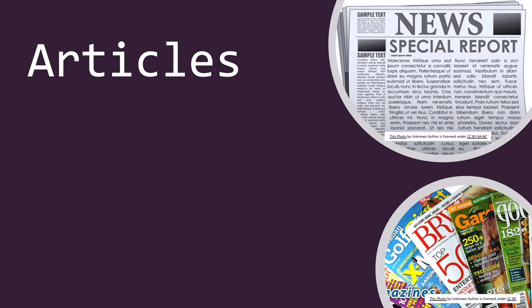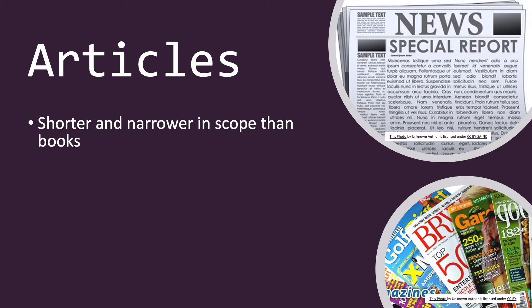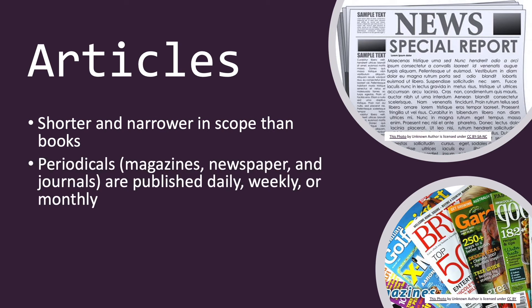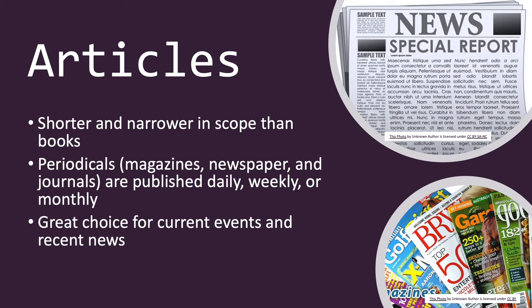Next, we'll take a look at articles — it's a different type of source, but you can use the same tool to find them. These are shorter and narrower in scope than books. Periodicals, which is where articles come from, include magazines, newspapers, and journals, and they're published daily, weekly, or monthly. So because they come out so often, they are a great choice for current events and recent news.